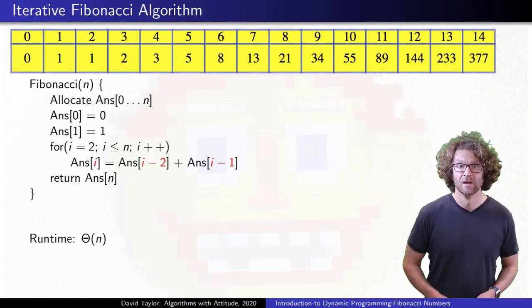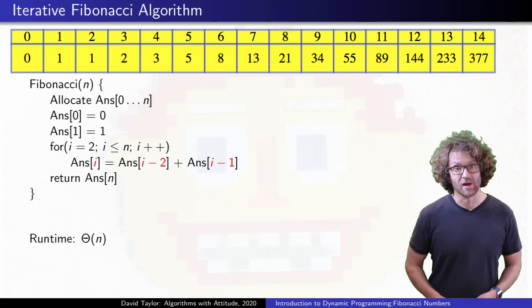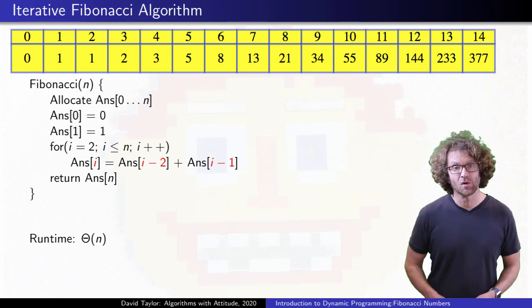So, if this takes linear time, the same as the memoized version, why bother? First of all, it is quicker. It replaces the overhead of recursive calls with a simple loop. More importantly, it lets us look at the table more carefully to see if we need the whole table.